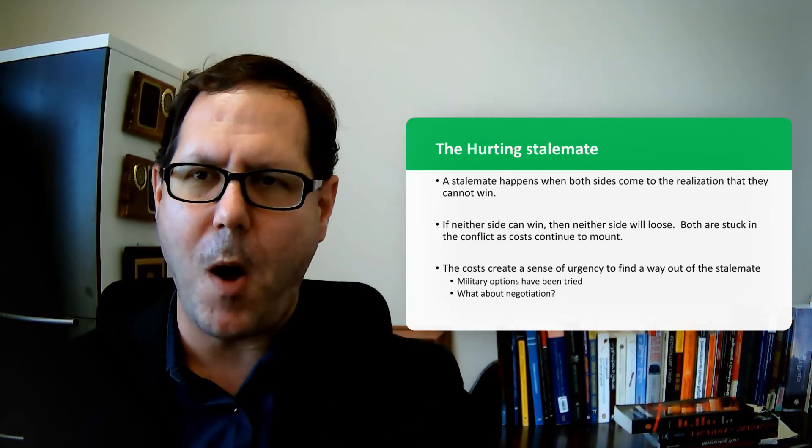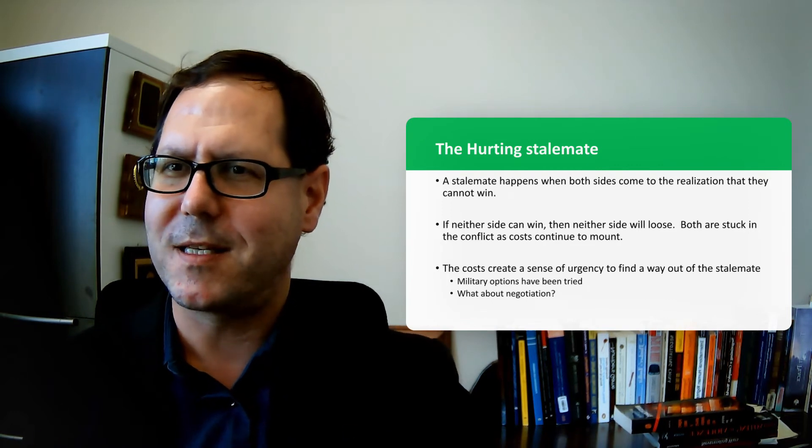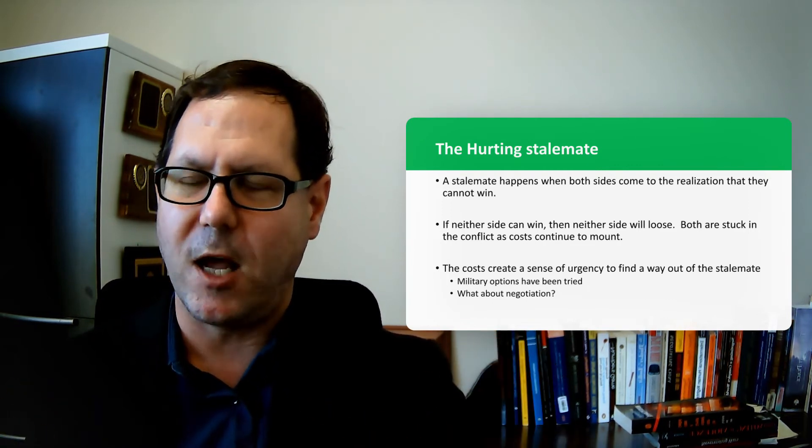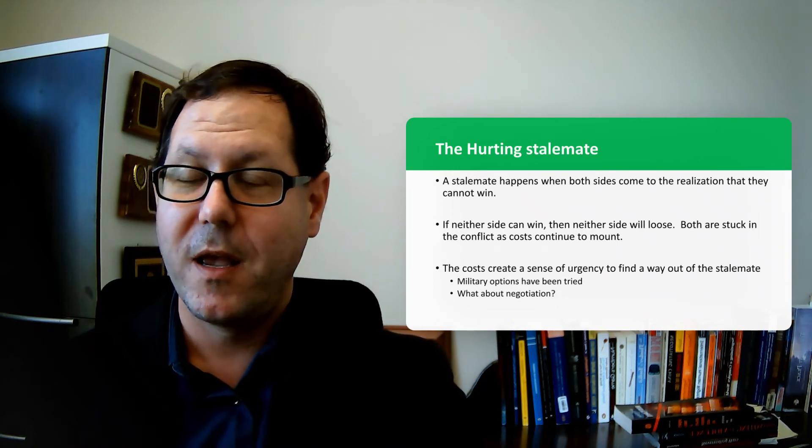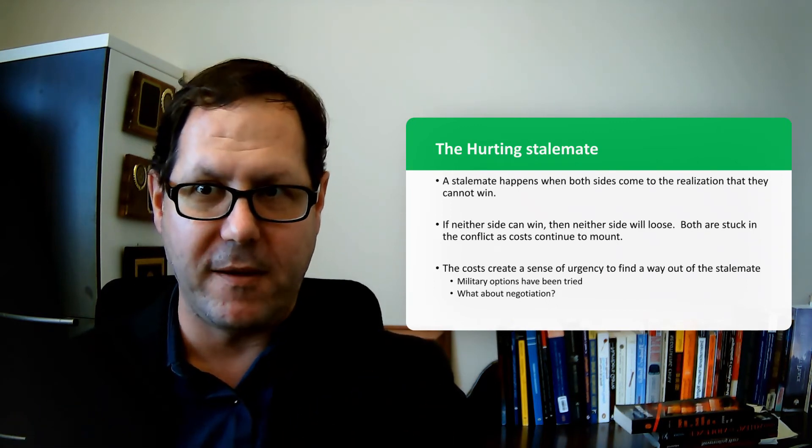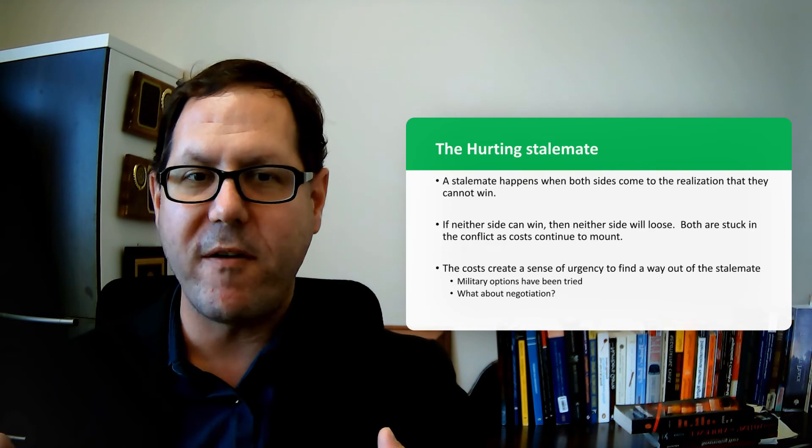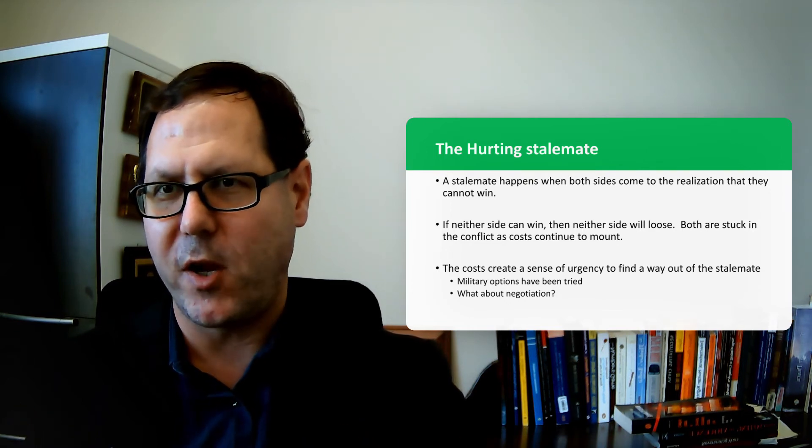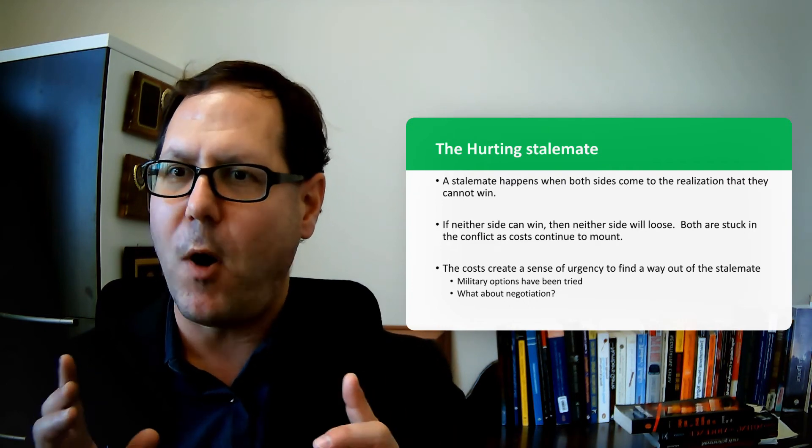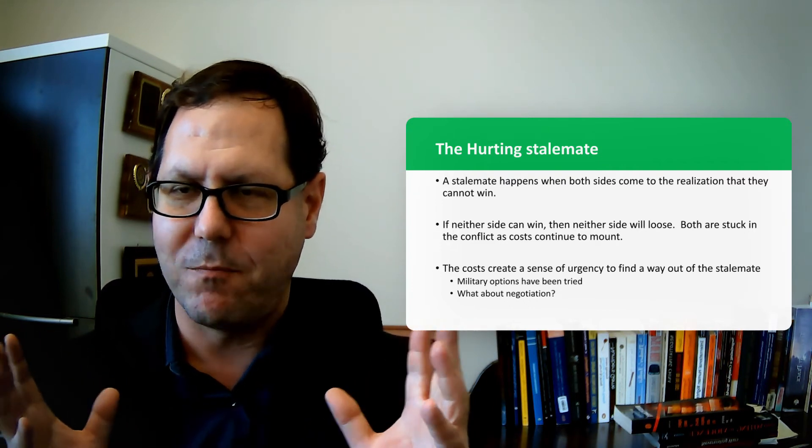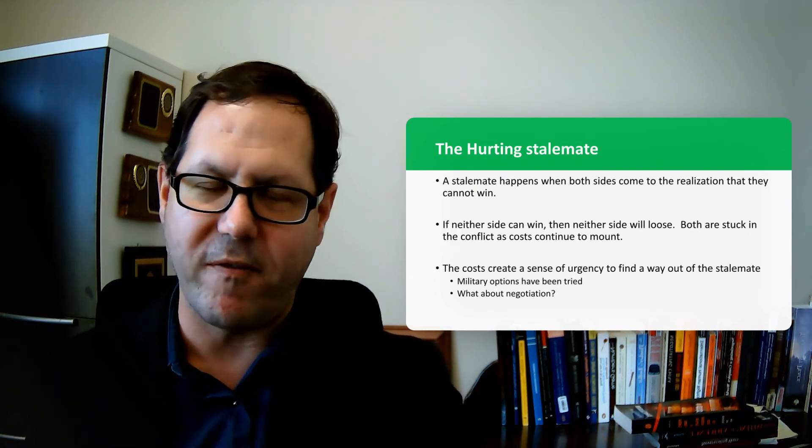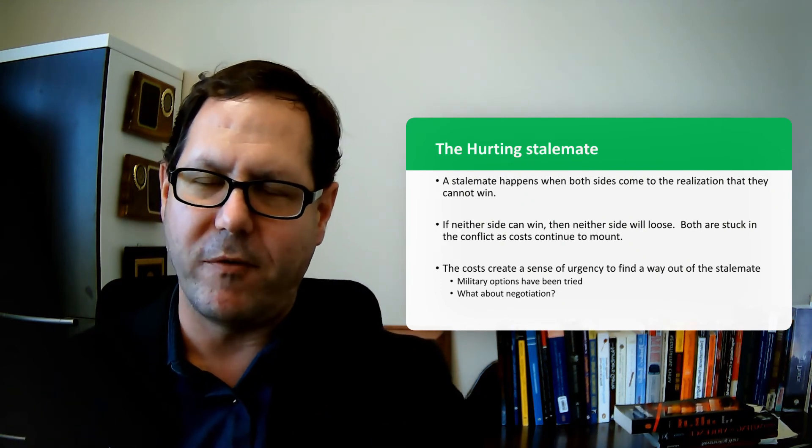So there's two components from Zartman's concept of ripeness that come into play here. There's the mutually hurting stalemate that both parties want out, but there also has to be a belief, a perception, that there's a way forward. That there's a way out of this, that you can actually use negotiation to solve your problem. And unless you have both of those pieces, that panicked moment of we have to get out of this, and the perception of, this is the way forward, you don't actually have a moment of ripeness.